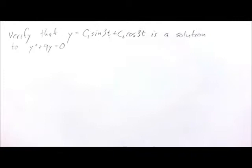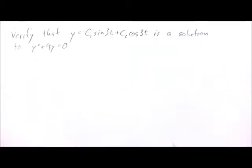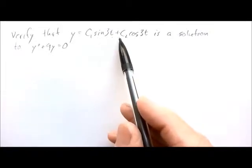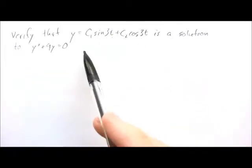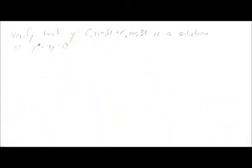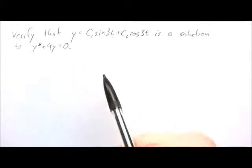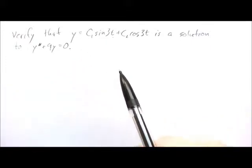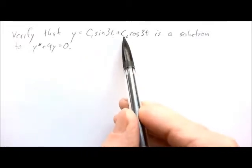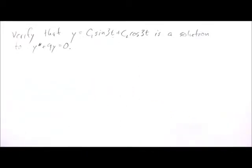We're going to continue looking at what it means for a function to be a solution to a differential equation. We have the function y equals c1 sine 3t plus c2 cosine 3t, and we're to verify that it is a solution to this second-order ordinary differential equation. Any time we use the letter c, that stands for a constant — c1 and c2 are possibly different constants.